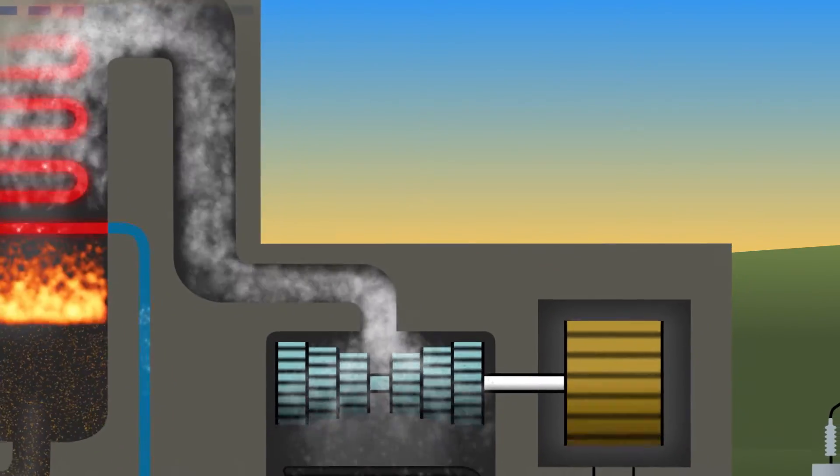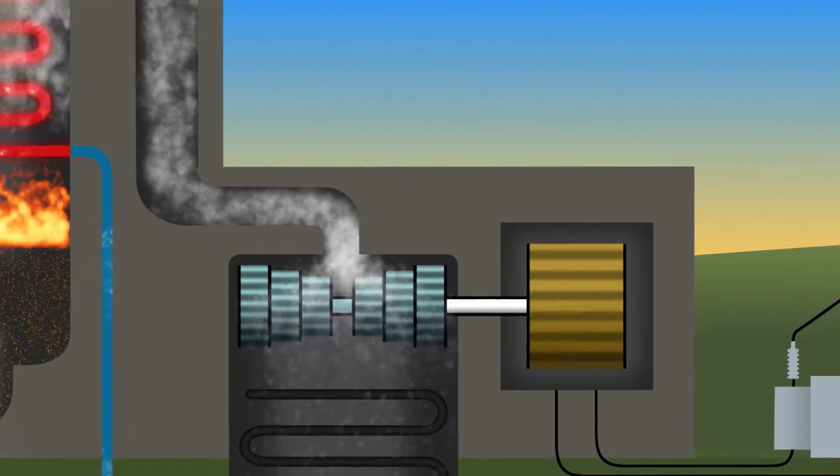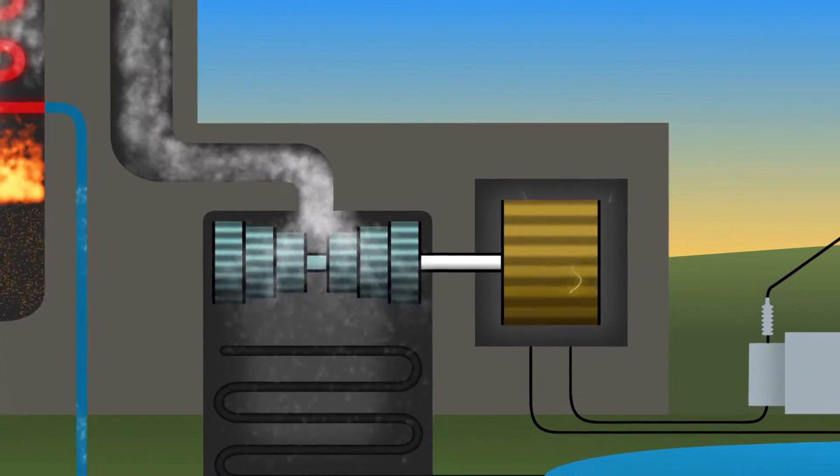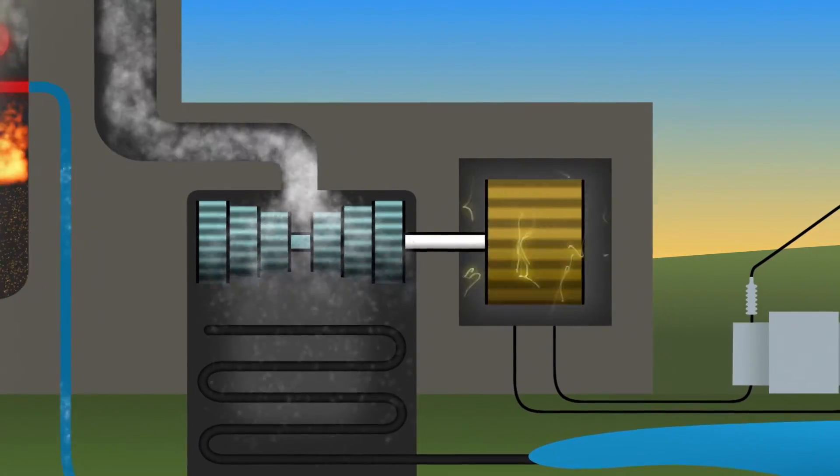The generator rotates long coils of copper wire inside powerful magnets, turning the spinning motion, that is, kinetic energy, into electricity.